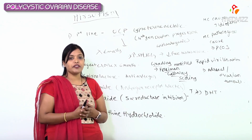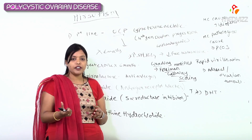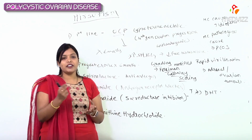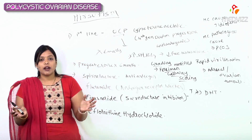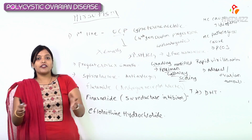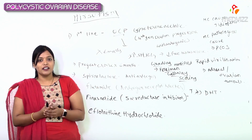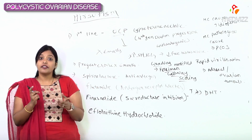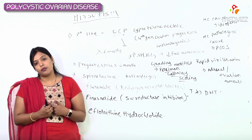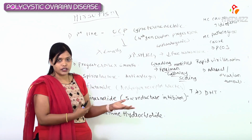That covers treatment for the adolescent girl. Now, for the reproductive-age patient who is married: once married, the main concern becomes infertility, not hirsutism. So PCOS with infertility is what we will discuss next.